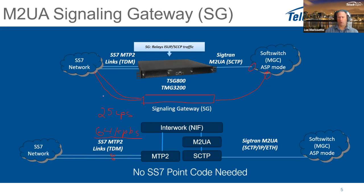You can have four SS7 links providing redundancy per unit, redundancy per T1 (since these can be four different T1s), and increased capacity. You could run at 50 or 75 calls per second across three links even if one of those links is down.